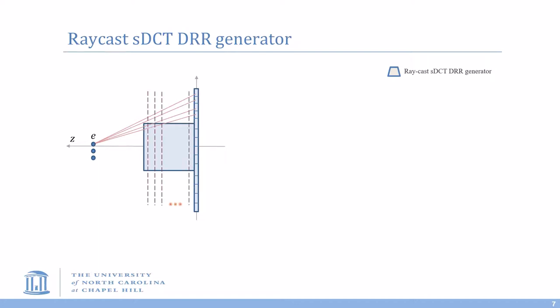Meanwhile, we discretize the 3D volume into layers and compute the intersections between the virtual rays and the discretized layers. Then we calculate the attenuation coefficient at the intersections and integrate over the attenuation coefficient along each virtual ray to get the sDCT DRR of a 3D volume in log space.